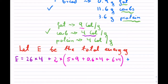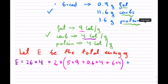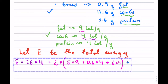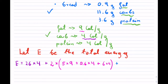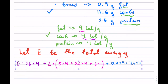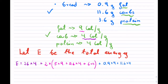And finally, the last one is the bread. For our bread: 0.9 grams of fat times 9, plus 11.6 grams of carbs times 4, plus 3.6 grams of protein times 4. So to recap: the first term was orange juice, the middle term was the 2 eggs, and at the end we have the bread.